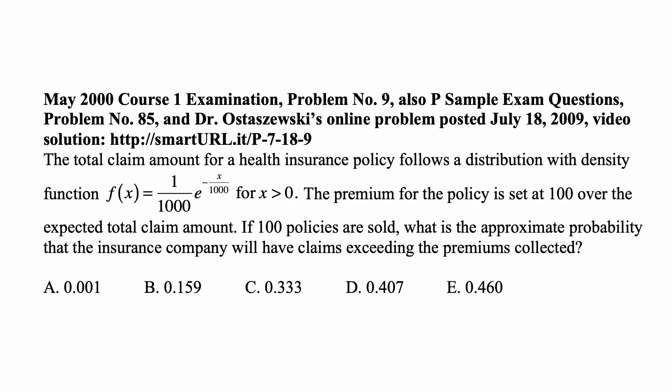Here's a problem for today, for example P on probability. The total claim amount for a health insurance policy follows a distribution with density function f(x) = (1/1000)e^(-x/1000) for x > 0. The premium for the policy is set at 100 over the expected total claim amount. If 100 policies are sold, what is the approximate probability that the insurance company will have claims exceeding the premiums collected?